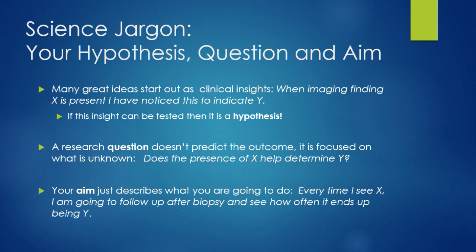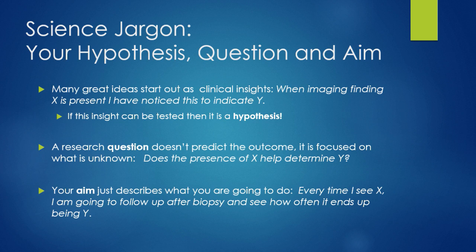A hypothesis should be phrased in a way that can be mathematically tested. You start with your question — for example, does a certain imaging test have greater sensitivity for detecting cancer? Then you have your hypothesis, stated in a mathematically testable way, such as whether the detection rate using ROC analysis for this technique is greater than existing techniques. The aim is basically how you're going to go about proving or testing your hypothesis.